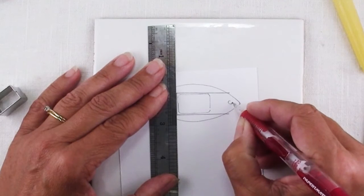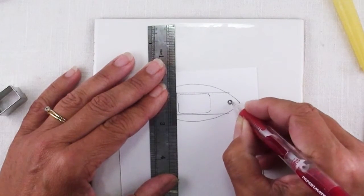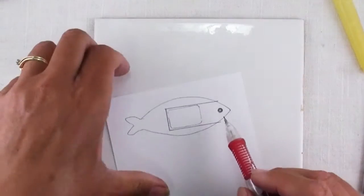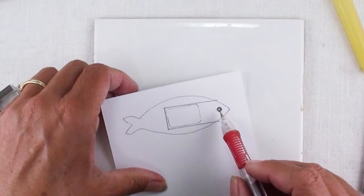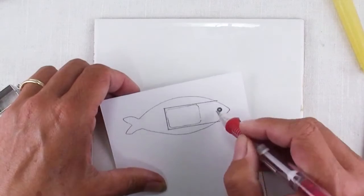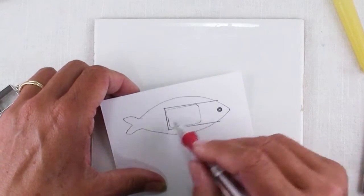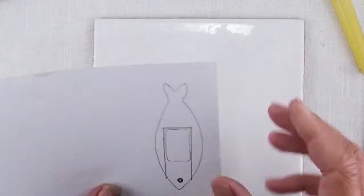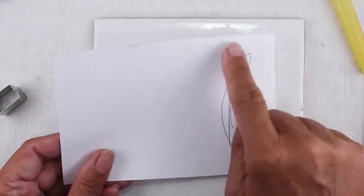And also draw a circle. This is important. This is what the chain for the luggage tag will go through and it will also keep your piece of paper in here, keep it from coming out. Now you just need to cut this out.